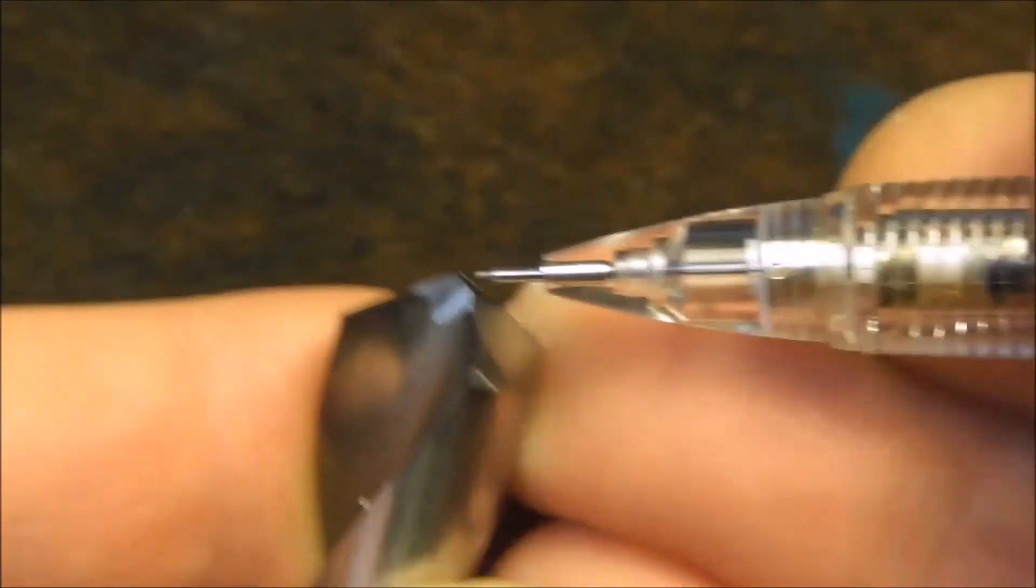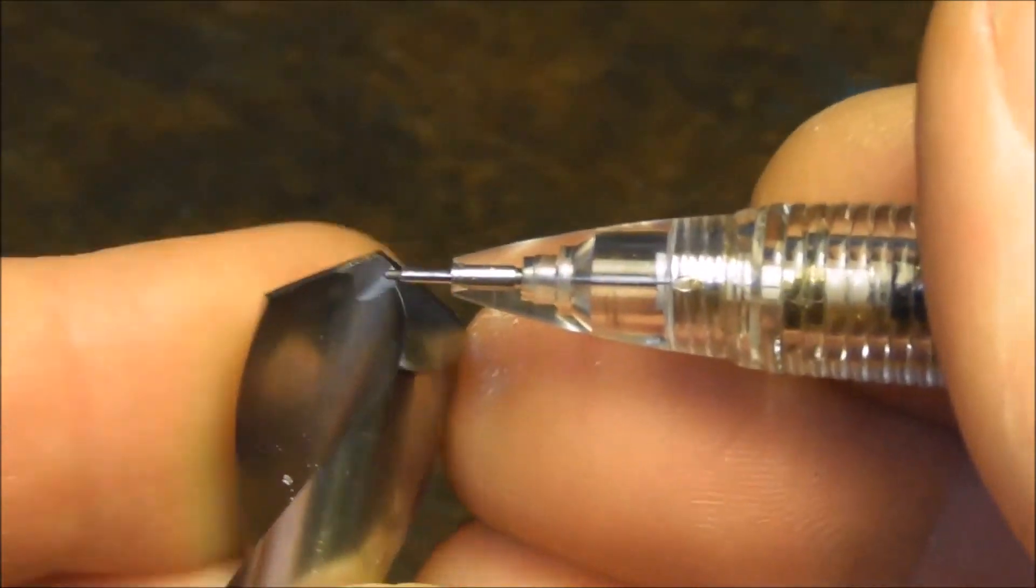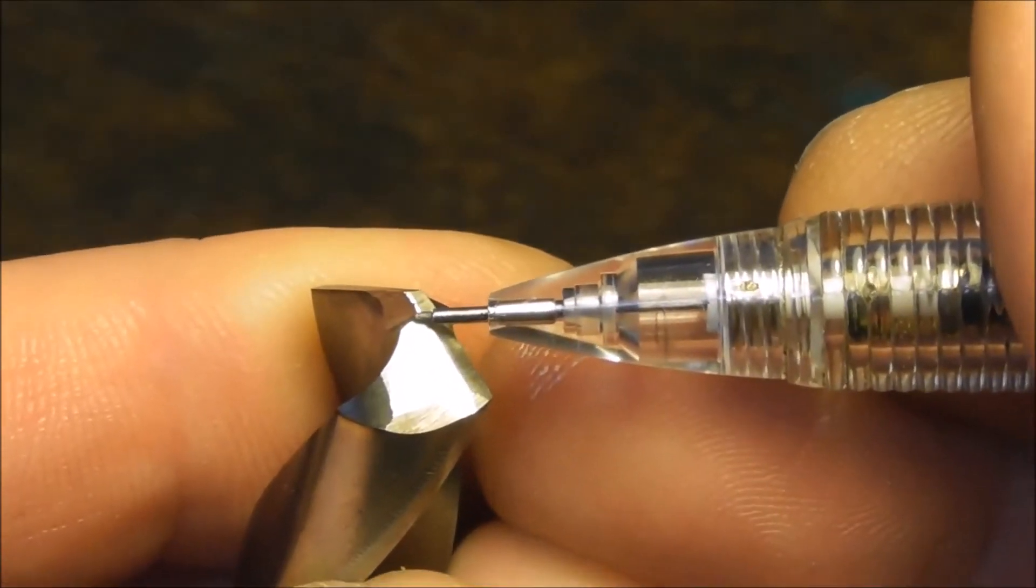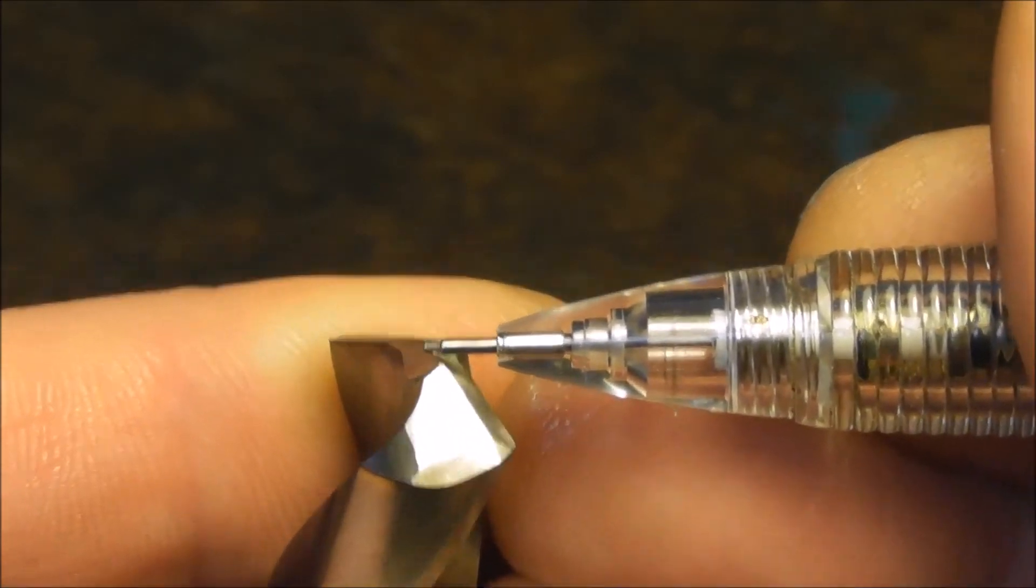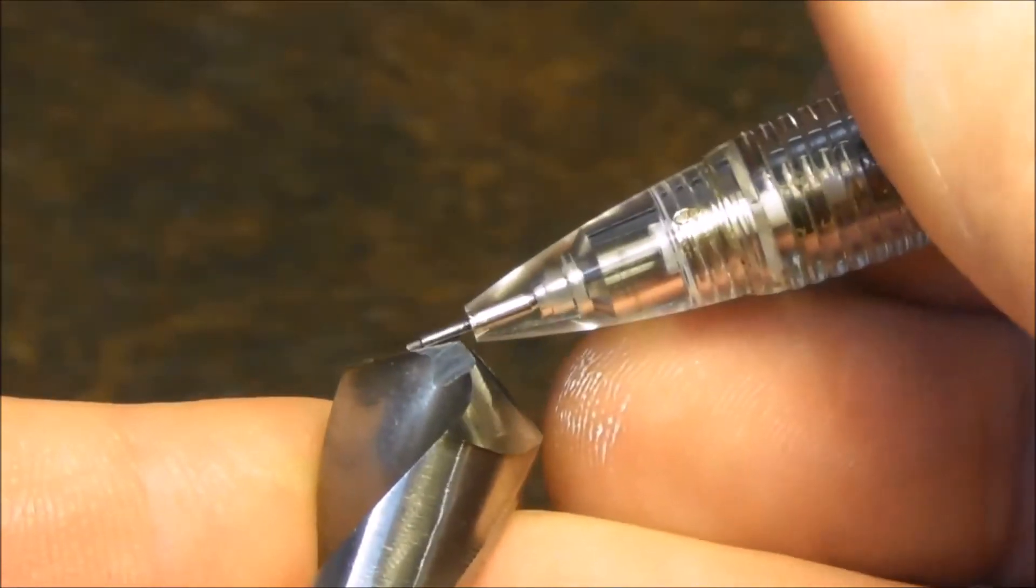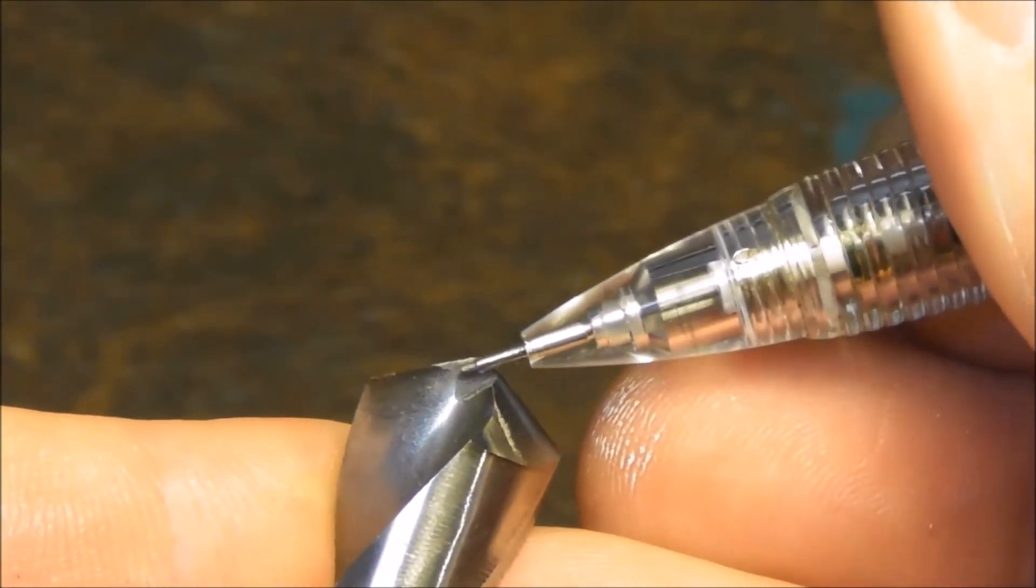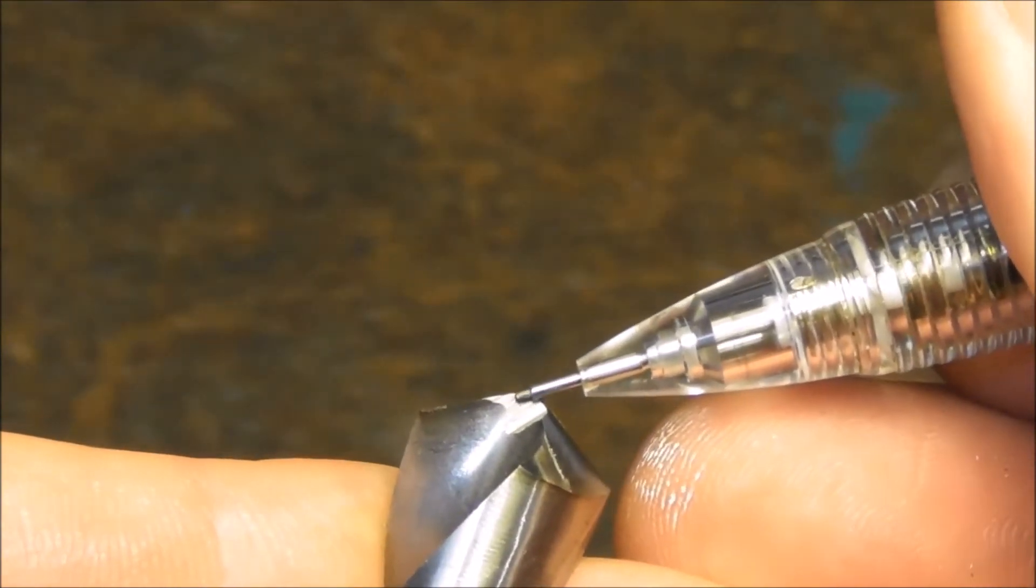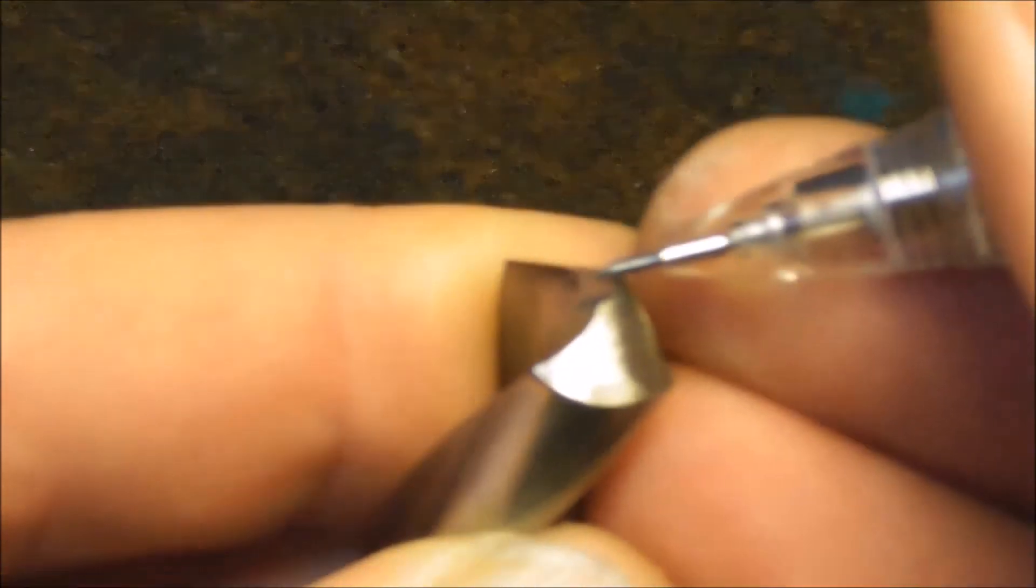Let's look at web thinning and split point for a minute. Web thinning refers to removing that bulk of material from the web of the drill and effectively extending the length of the flute cutting surface. So instead of the flute cutting surface ending here, it carries on further across to the center of the drill. You're grinding away this portion here.